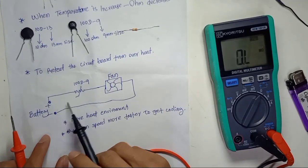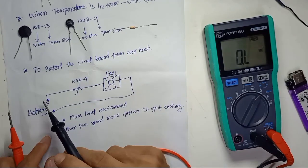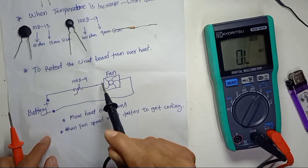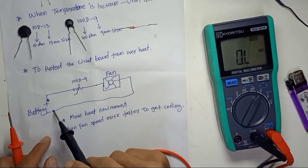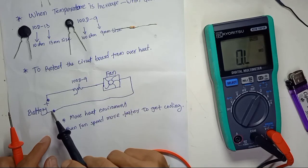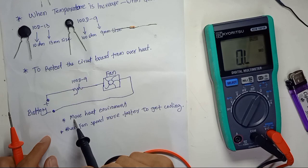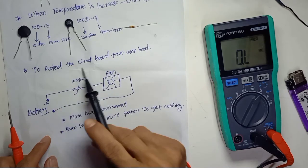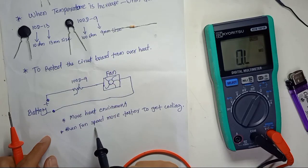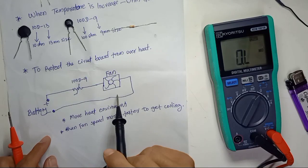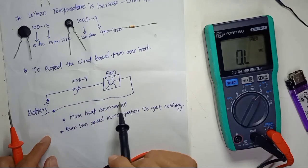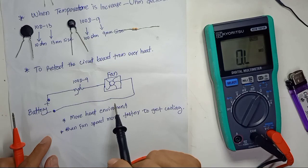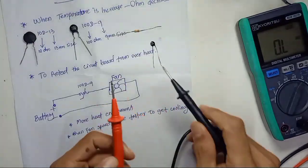Here I've drawn a sample circuit. The positive DC power goes through the thermistor, then through the fan, and back to the battery negative. The hotter the environment, the lower the thermistor's resistance, and the faster the fan spins to cool the whole circuit board.